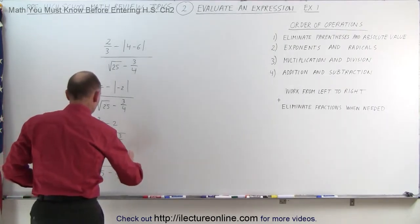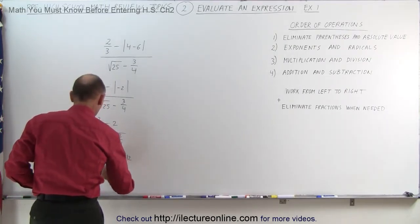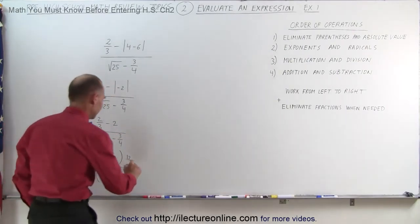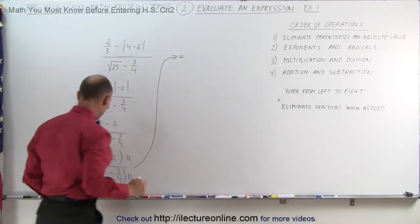So what we're going to do is we're going to multiply the denominator by 12 and we're going to do exactly the same with the denominator. Let's see what happens when we do that. So let's go up here.